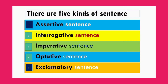There are five kinds of sentence according to meaning. Number one: assertive sentence. Number two: interrogative. Number three: imperative. Number four: optative. Number five: exclamatory sentence.